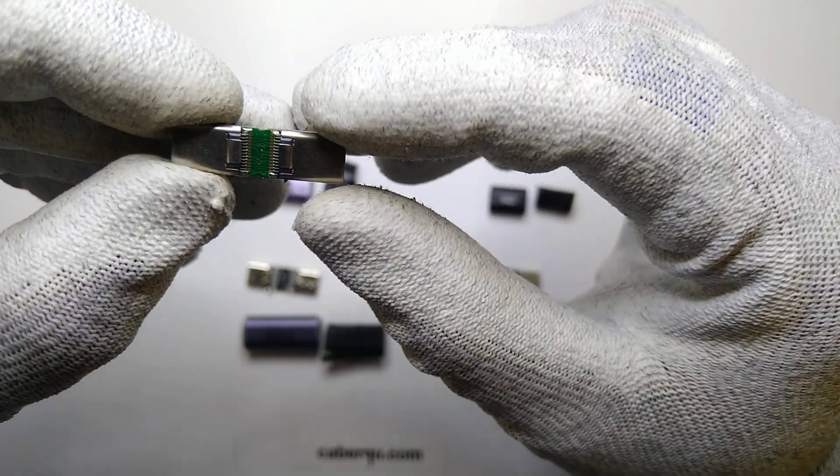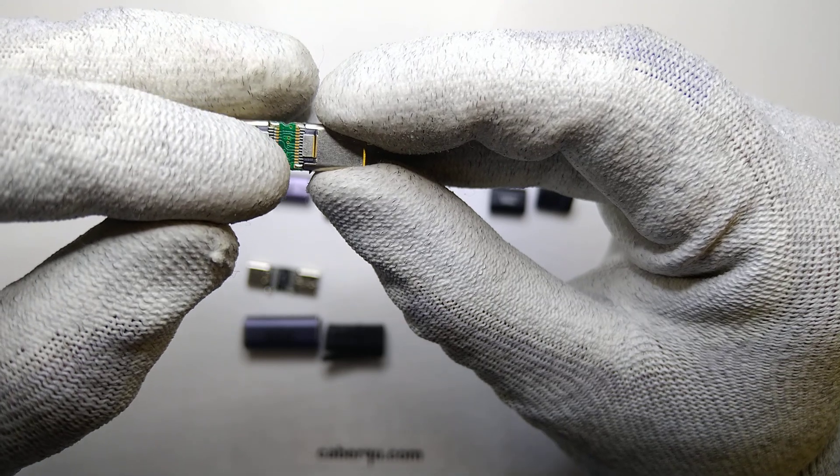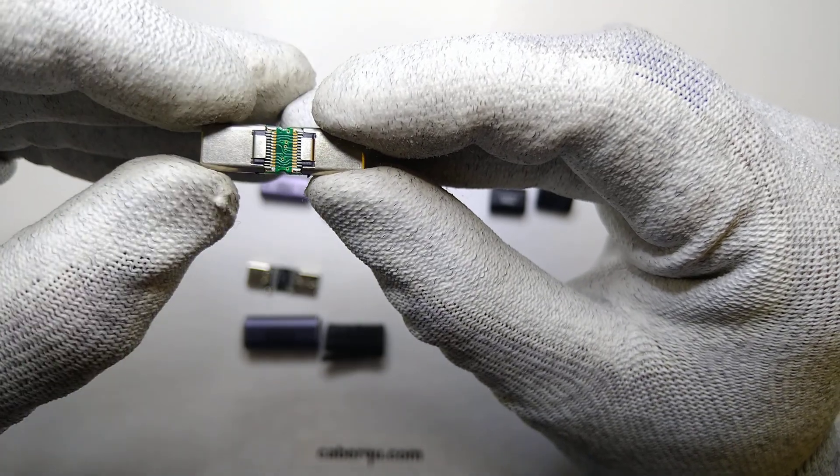So the ones that are routed straight through are, for example, the V-Bus and the ground connections. And the ones that are crossed out, as you can see with the trace over here, are, for example,